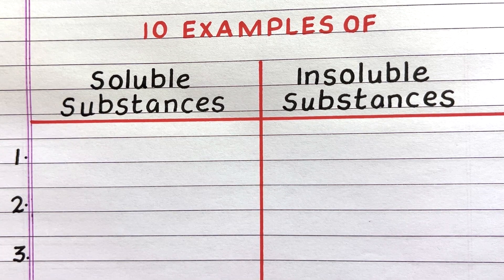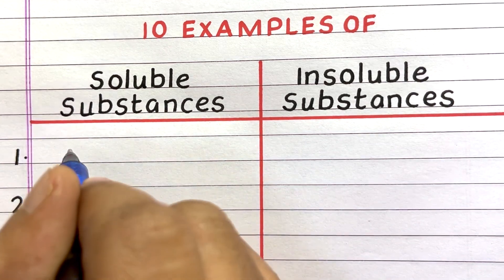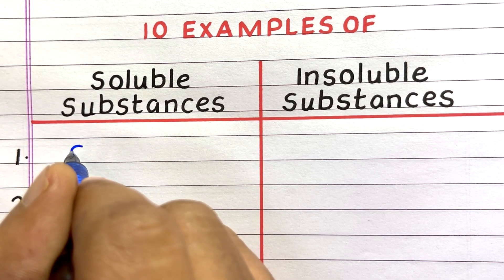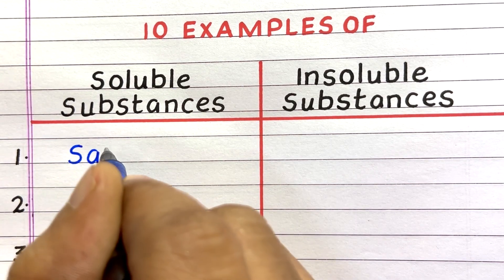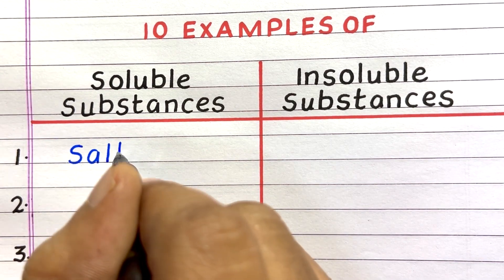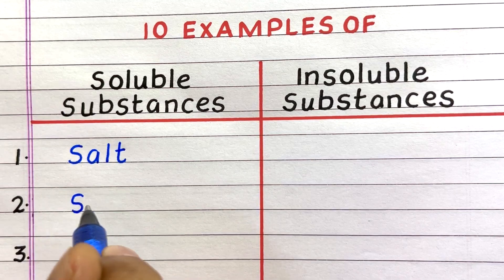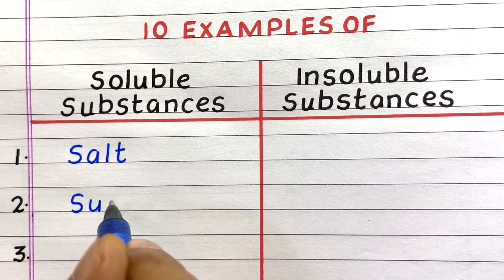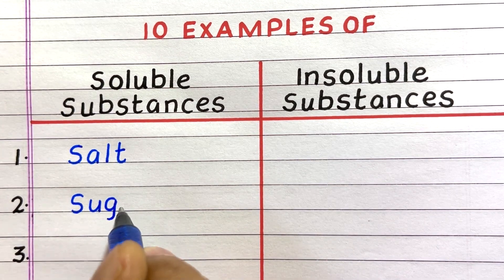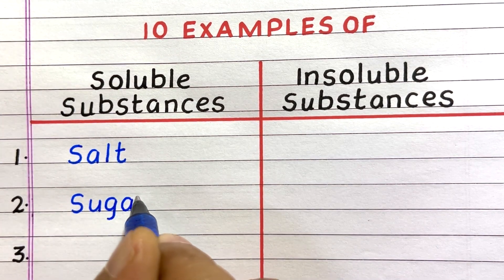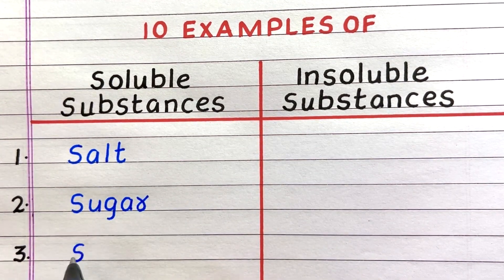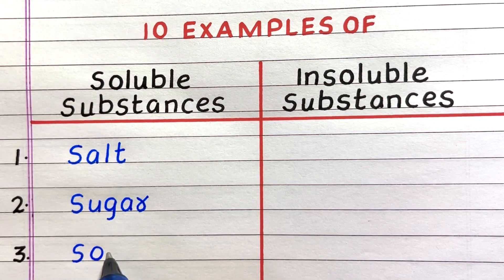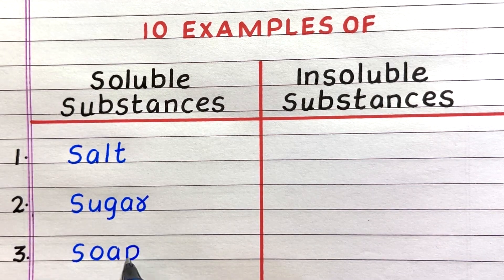Let's get into the video. First example of a soluble substance is salt. Second, sugar. Third, soap.